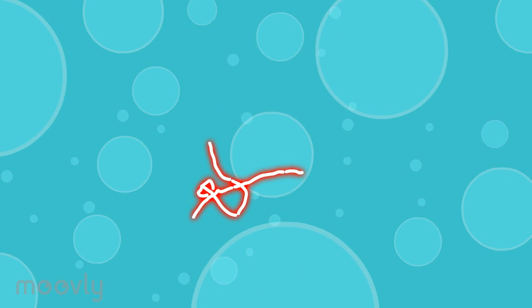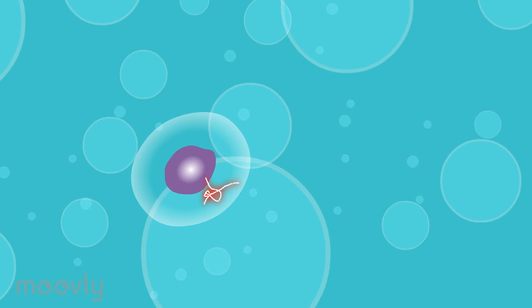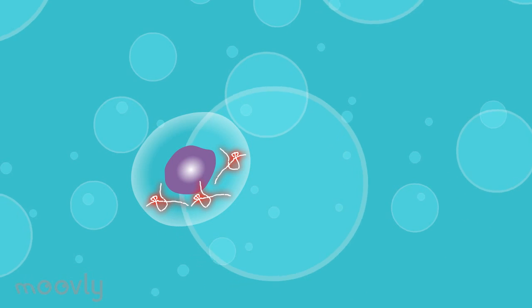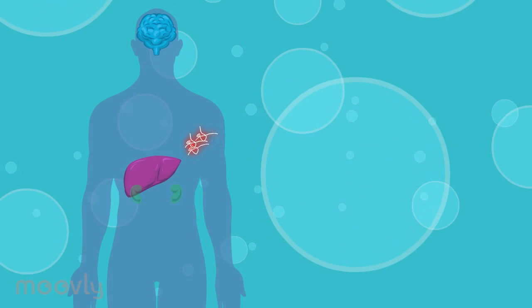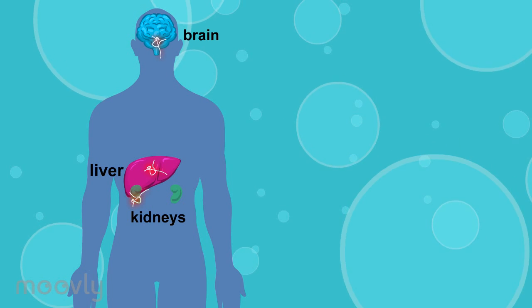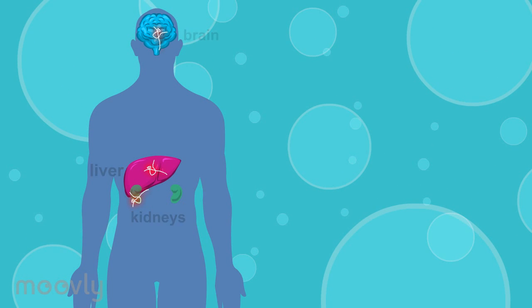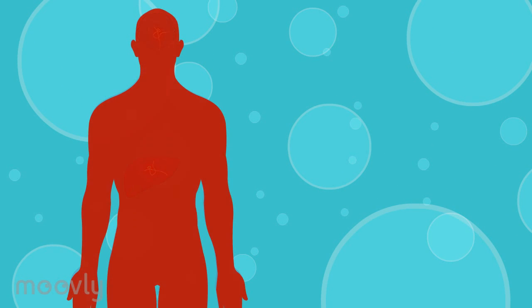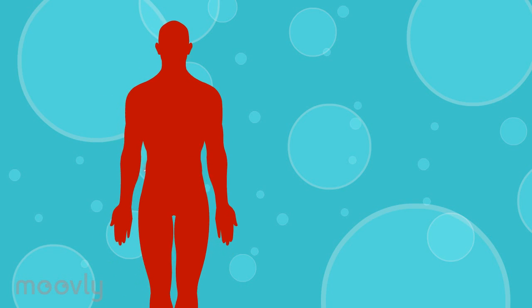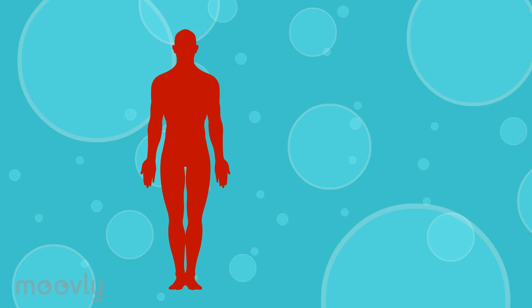The Ebola virus infects the immune cells in the body and uses these to replicate itself and to travel to other organs, such as the liver, the kidneys, and even the brain. This way, the virus gradually takes control of the body and causes significant damage, especially to the blood vessels.